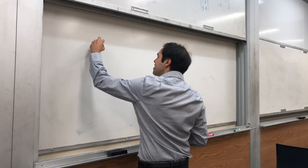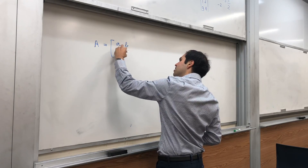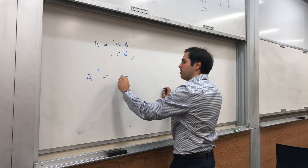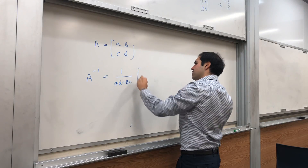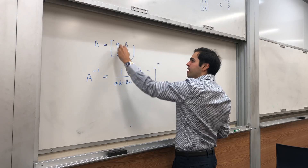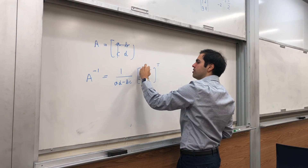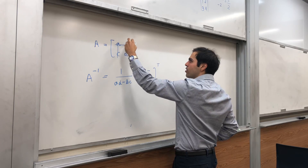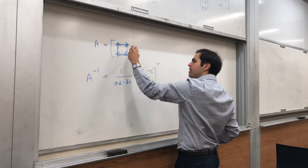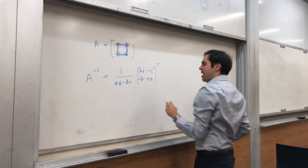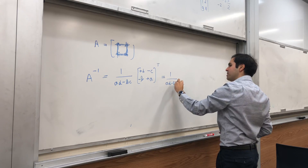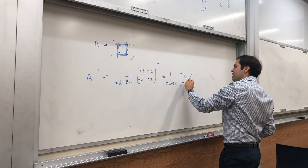Let's assume A is [a, b; c, d]. Then what does this formula say? A inverse is 1 over the determinant of A — so ad − bc. You put the sign table plus, minus, minus, plus. Here you take the determinant of [d], then minus [c], then [b], then [a]. Transposing flips it, and you get 1 over (ad − bc) times [d, −b; −c, a]. That's precisely how you get that formula.